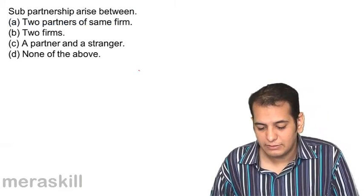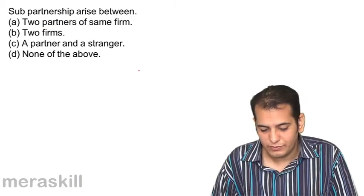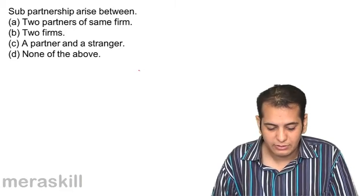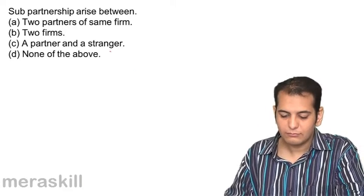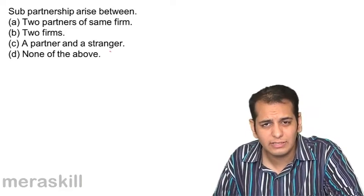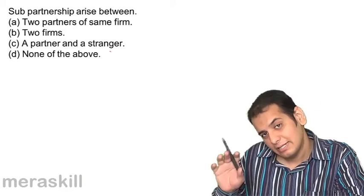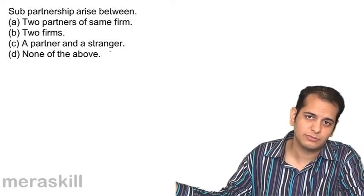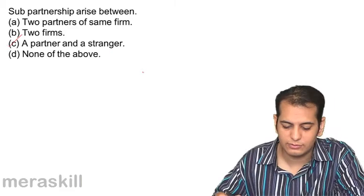Sub-partnership arises between: A. two partners of the same firm; B. two firms; C. a partner and a stranger; D. none of the above. Sub-partnership will always arise between an existing partner of a firm and some stranger, some other person. So C is the answer.